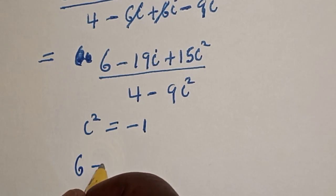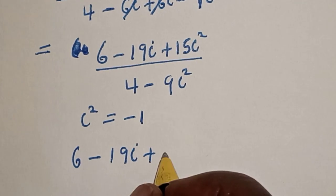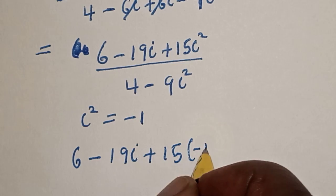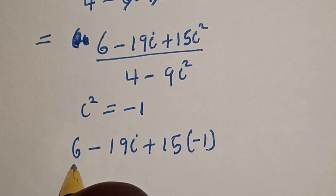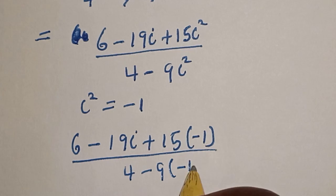We have 6 minus 19i plus 15 into minus 1 over 4 minus 9 into minus 1.